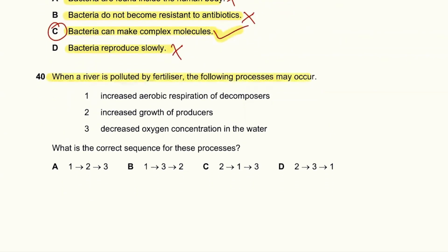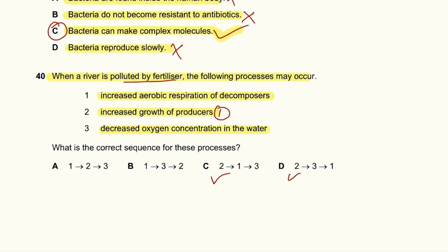Question 40: When a river is polluted by fertilizer, processes may include increased aerobic respiration of decomposers, increased growth of producers, and decreased oxygen concentration. Fertilizer first causes increased growth of producers — that is step two. Then when nitrate runs out, those producers die, causing bacteria to decompose them, using up all the oxygen. This decreases oxygen concentration in the water. So the correct order is two, one, three — answer C.